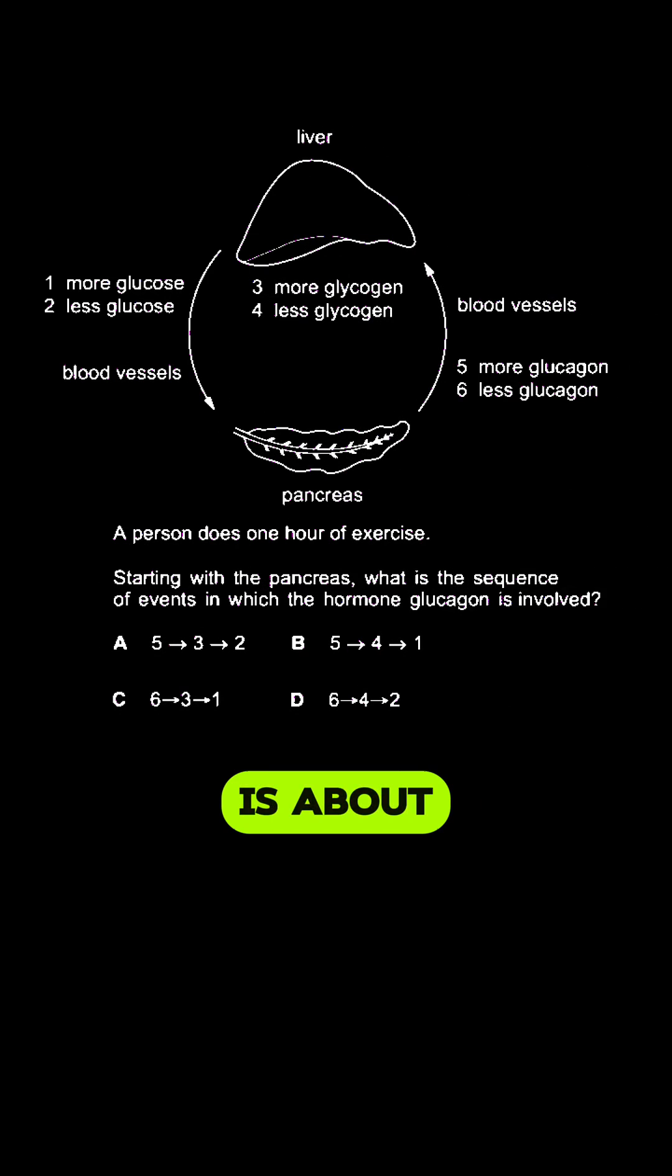Question 3 is about a person who does one hour of exercise. Starting from the pancreas, what is the sequence of events in which the hormone glucagon is involved?